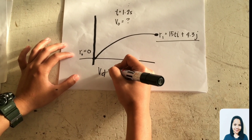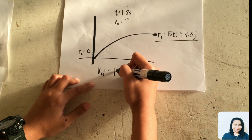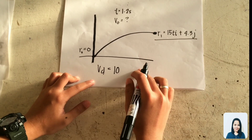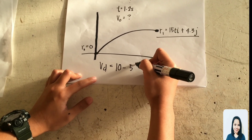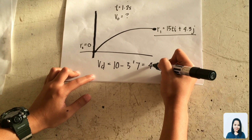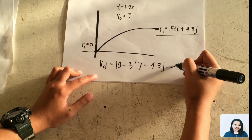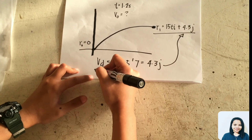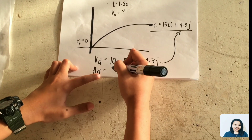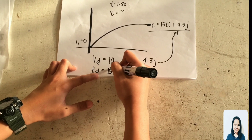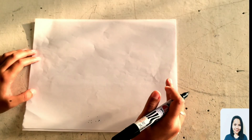Ngayon, kukunin natin kung paano nakuha itong equation na ito, base dun sa mga horizontal and vertical distance. Sa vertical distance, merong 10 feet at 5.7 feet. So pag na-minus natin yun, para makuha natin yung 4.3 feet. Sa horizontal distance, yun na yun, 15 feet.